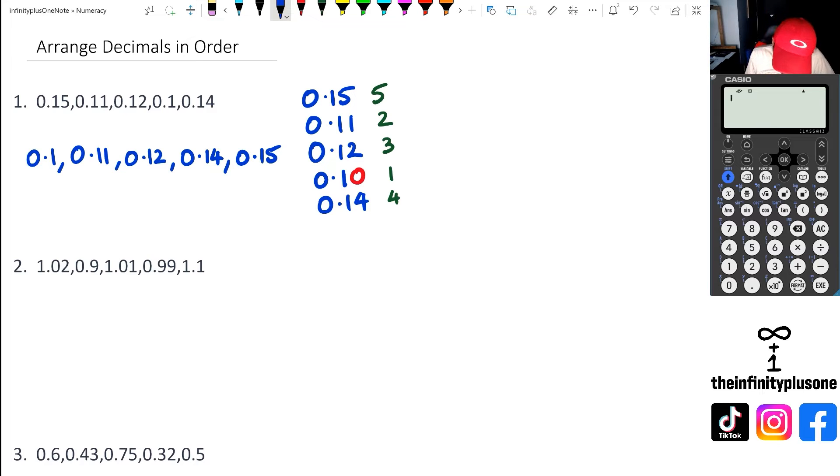For question 2, I'm going to write these numbers down: 1.02, 0.9, 1.01, 0.99, and 1.1. Once again, I'm going to put that little red 0 next to the 0.9 so I get 0.90.